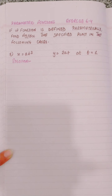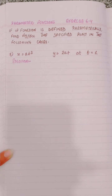The question is: if a function is defined parametrically, find dy over dx at the specified point in the following cases. Question 1 is: x is equals to at squared, y is equals to 2at, at t is equals to 1.